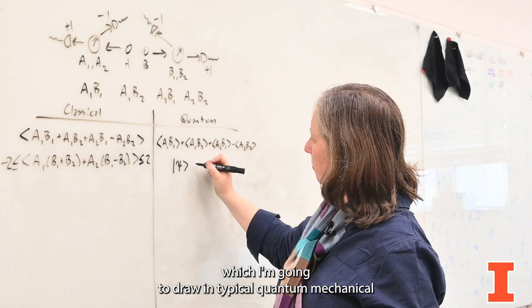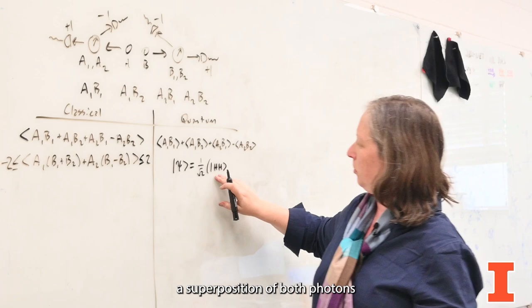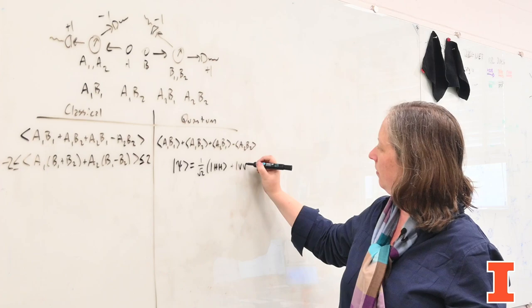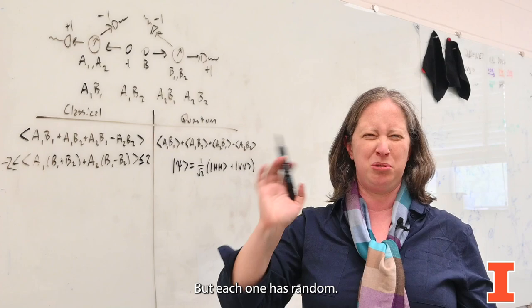The particular entangled state that we are going to consider is this state here, which I'm going to draw in typical quantum mechanical notation, which you don't fully have to understand. But what it is, is a superposition of both photons having horizontal polarization and both photons having vertical polarization. That is to say, the photons have the same polarization.